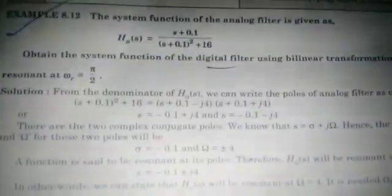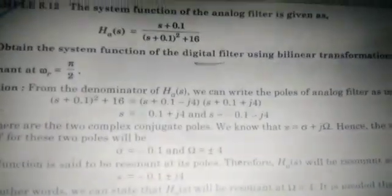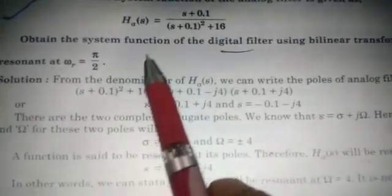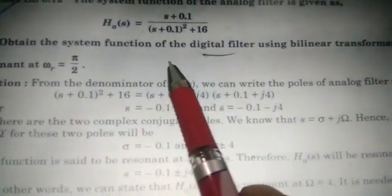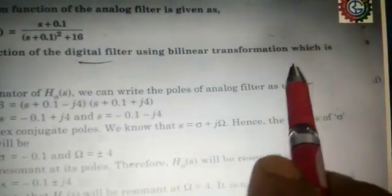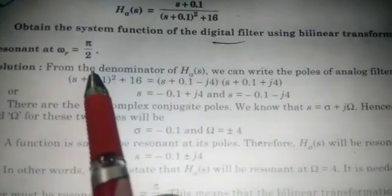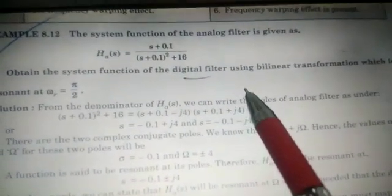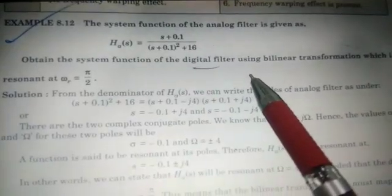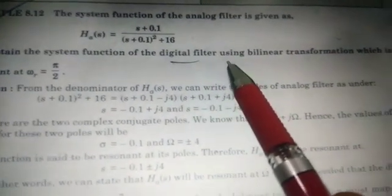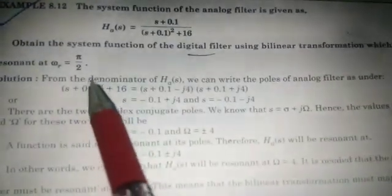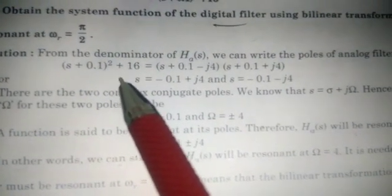Let us go through this numerical of IIR filter. The system function of the analog filter is given as: HA(S) = (S + 0.1) / [(S + 0.1)² + 16]. Obtain the system function of the digital filter using bilinear transformation, which is resonant at omega_r = pi/2. The analog transfer function is given and the approach is bilinear transformation technique, with the resonant frequency omega_r = pi/2 also given.